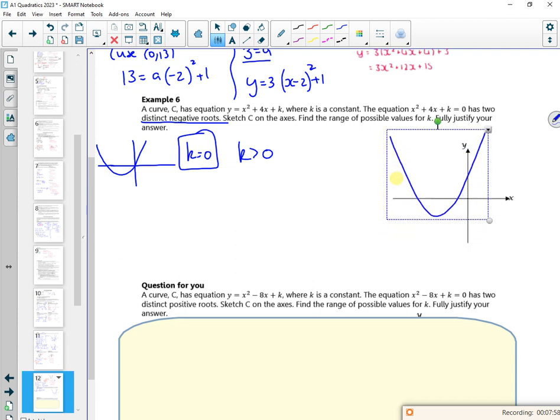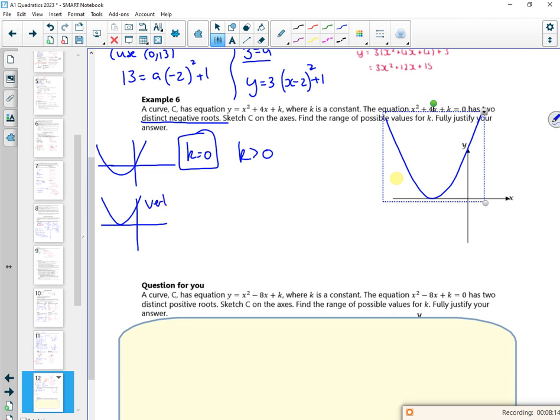Now I can keep on going up. It's got two distinct roots there. It's got two distinct negative roots there. It's got two distinct negatives. Oh no, it hasn't. So when it gets to the vertex, it's now only got one repeated root at the vertex. So if I find the position of the vertex and the y value for the vertex of that crossing point, then I'm okay. So let's have a look then.